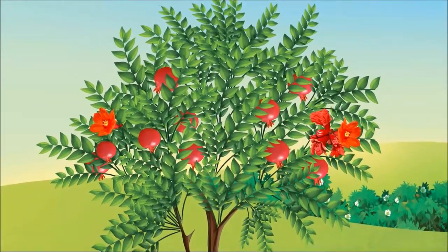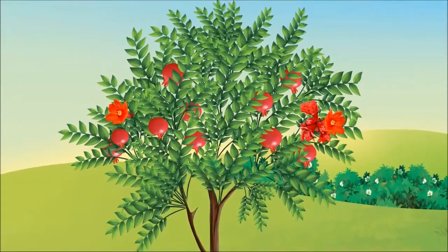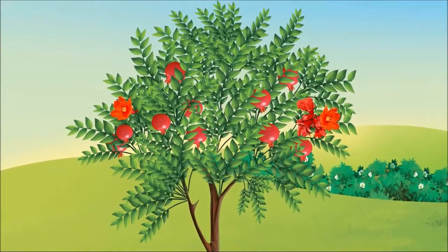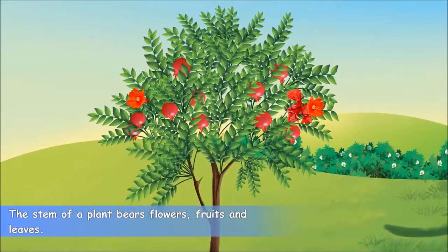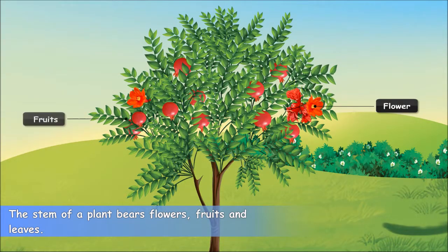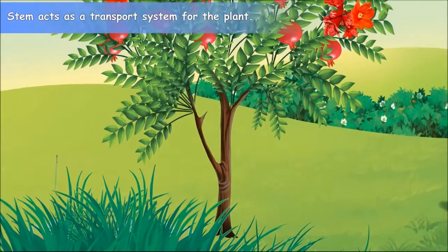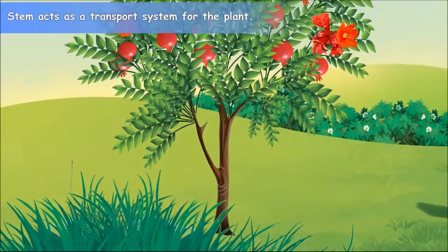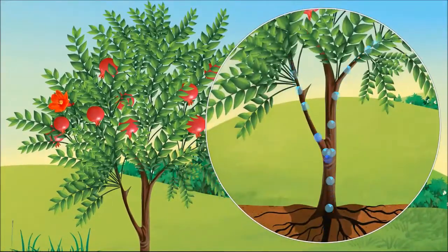Apart from offering main support to a plant, the stem performs a number of other functions. For example, it is the stem of a plant on which other plant parts like flowers, fruits and leaves grow.